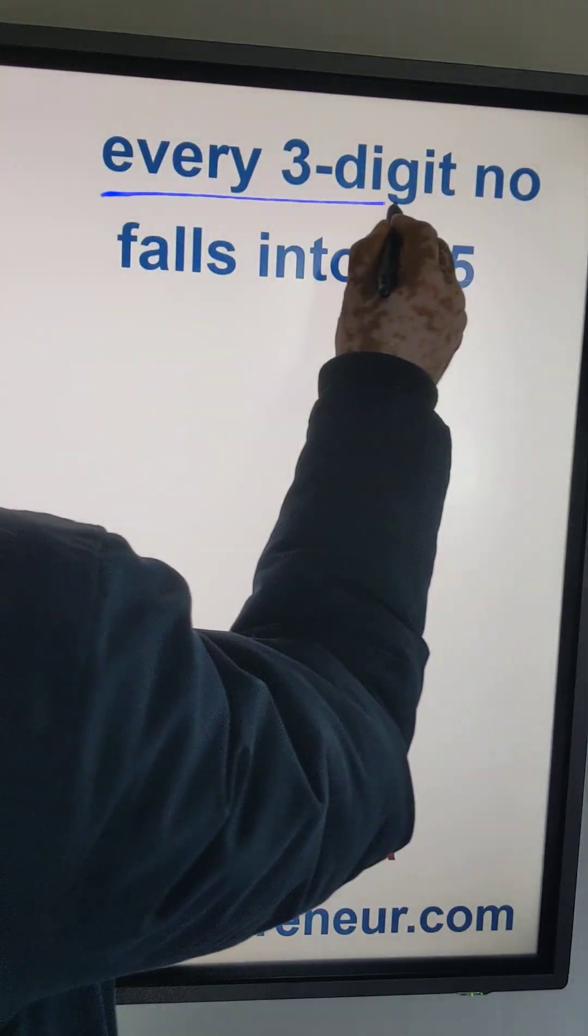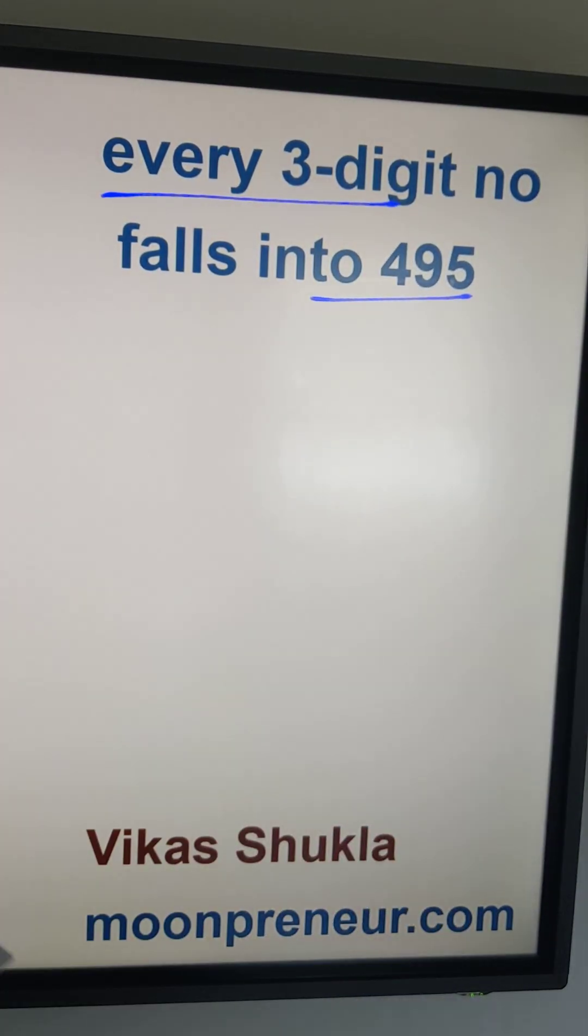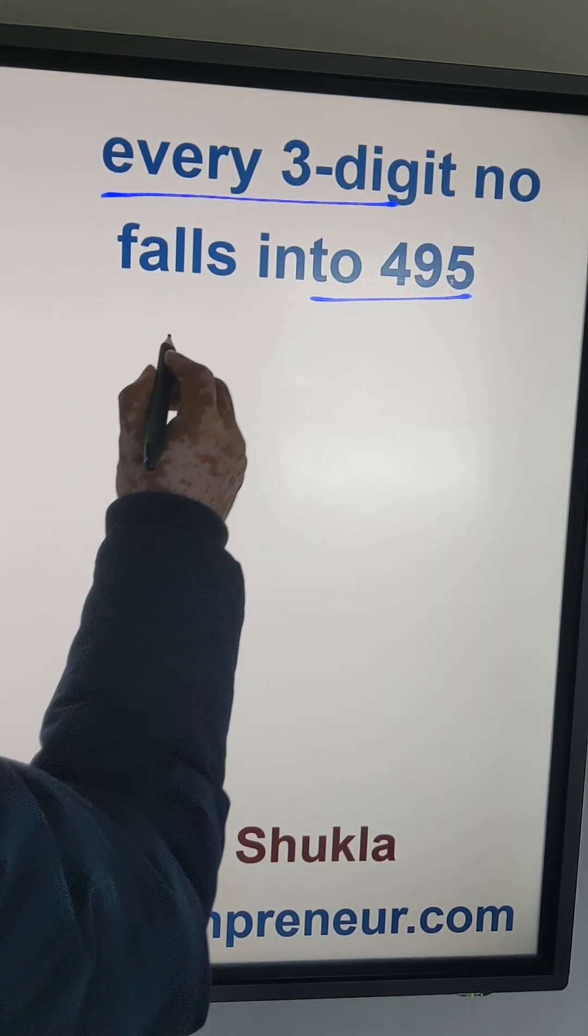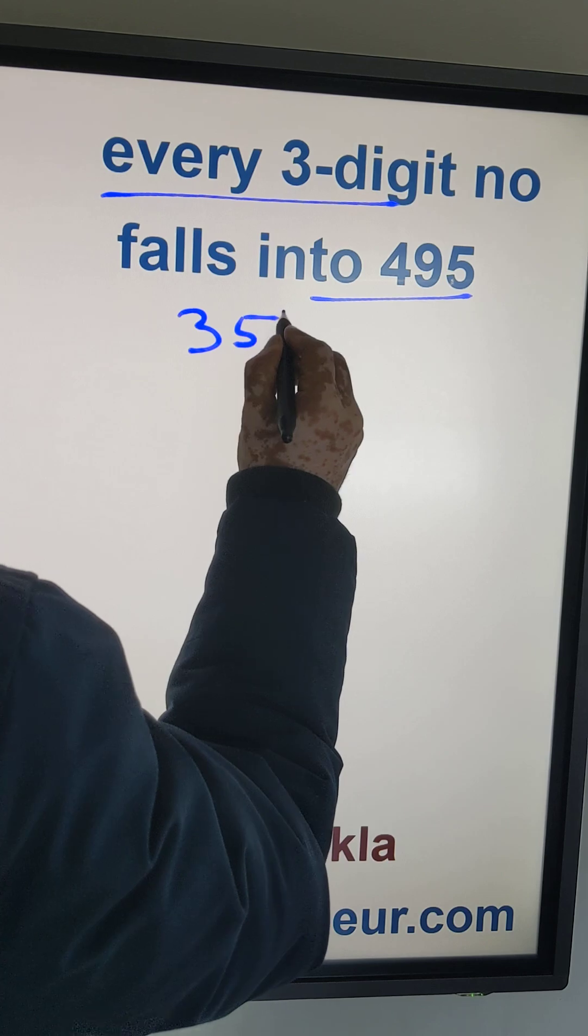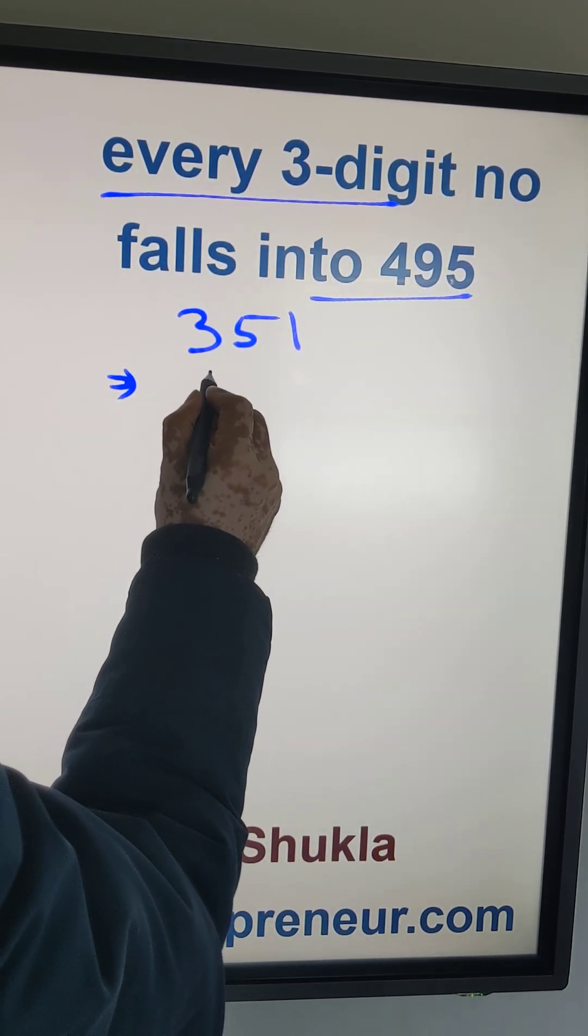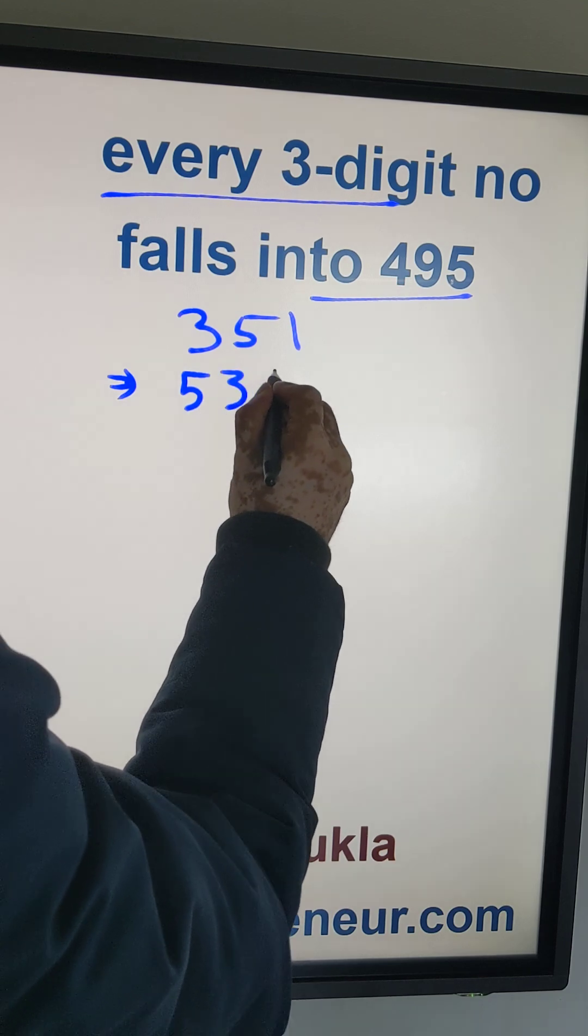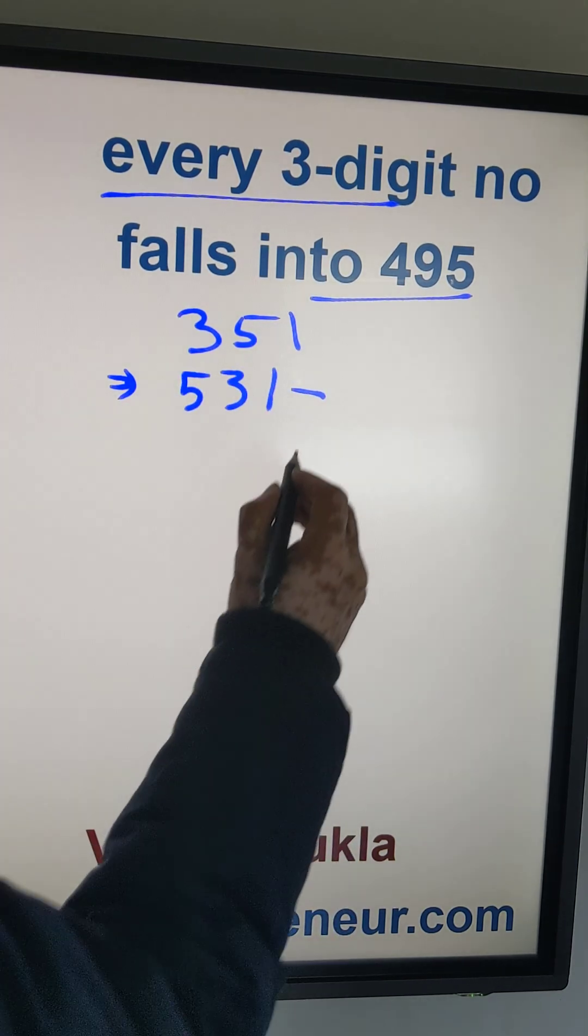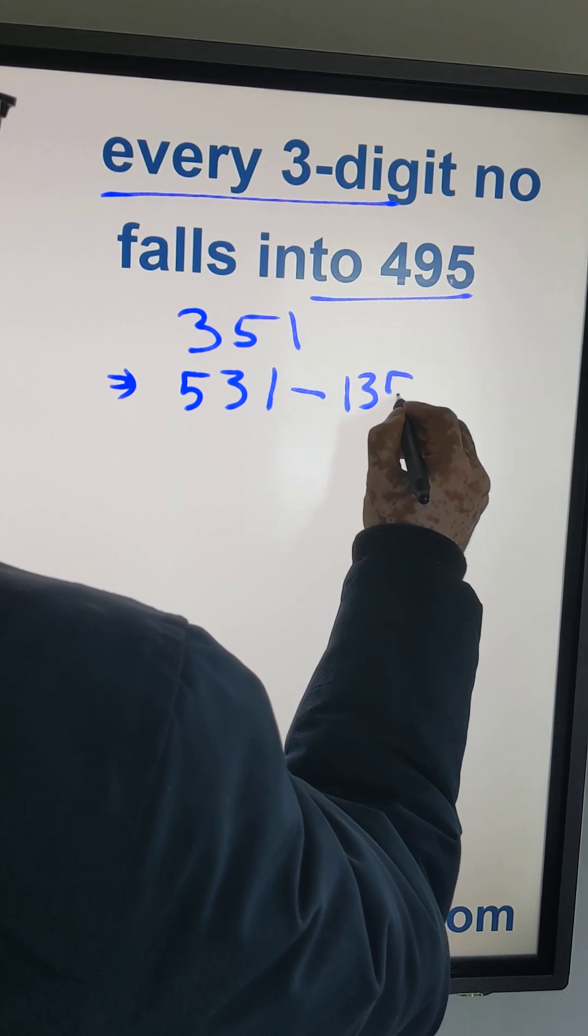Yes, every single three-digit number falls into 495, and let me tell you what it means. Let's take an example of a number like 351. What I do is I rearrange the number to take the largest of it, which is 531, and subtract rearrange the number so that we take the smallest of it, it's 135.